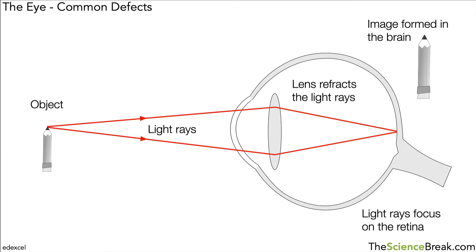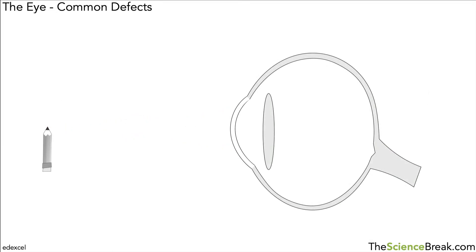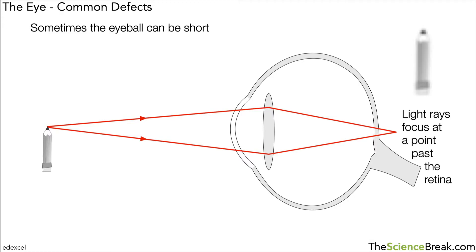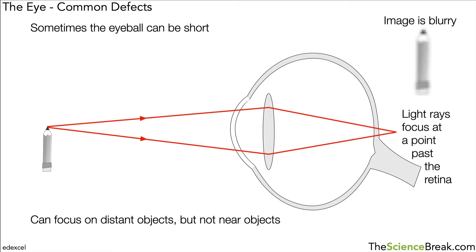Sometimes this can go a little bit wrong. One issue is where the eyeball is slightly shorter than normal. The light rays come off the pencil and refract at the lens, but they meet at a point past the retina. As a result, we see a blurry image. The eye can focus on distant objects but not objects that are near. We call this long-sightedness.